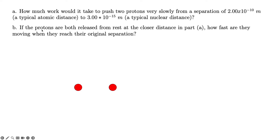The second part asks: if the protons are both released from rest at the closer distance from part A — that is, from 3×10⁻¹⁵ meters — how fast are they moving when they reach their original separation?